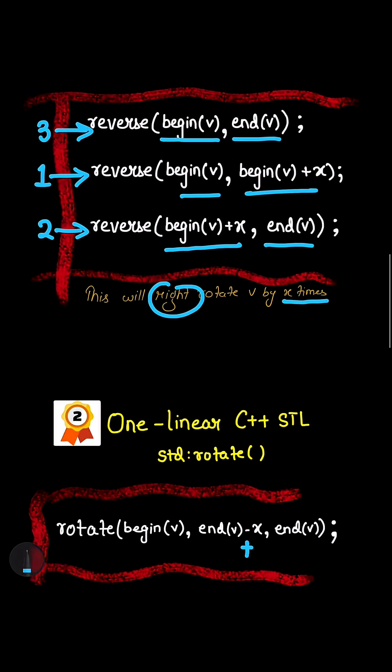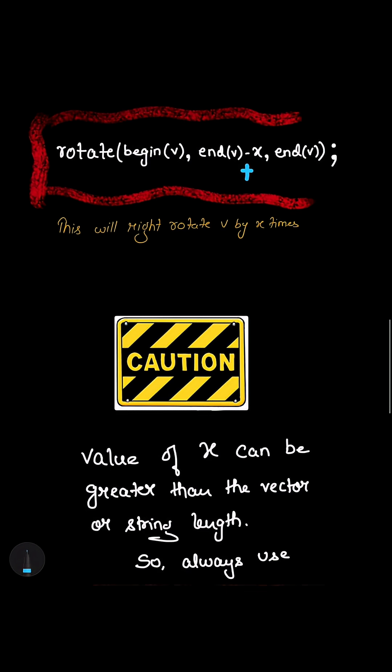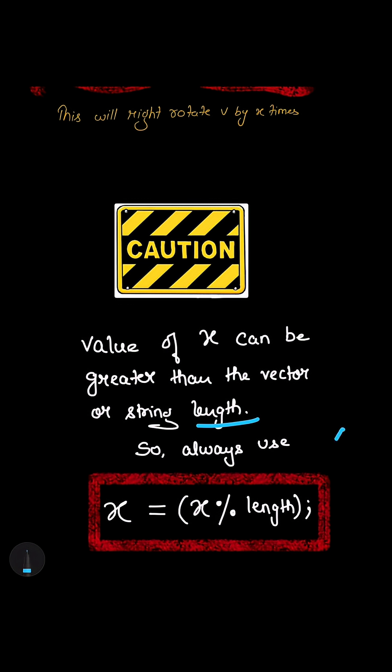So it's very simple, but be very cautious. In many times it happens that the value of x by which you want to rotate the vector or the string can be greater than the vector or string length. So always always use this whenever you have to rotate a vector or a string, that is take the modulo of x by the length of the vector or the string.